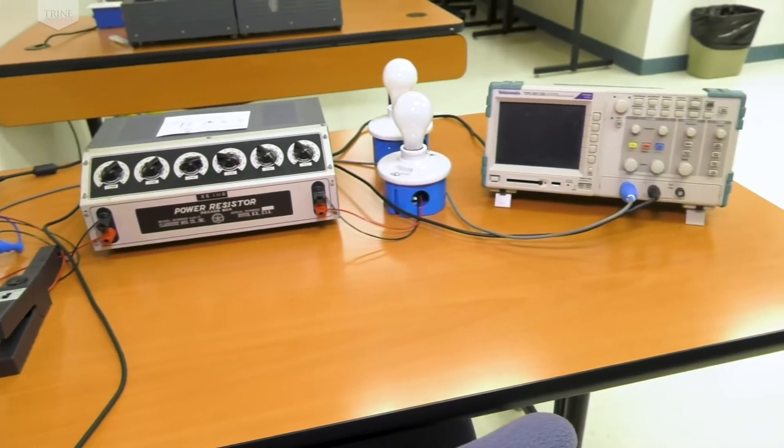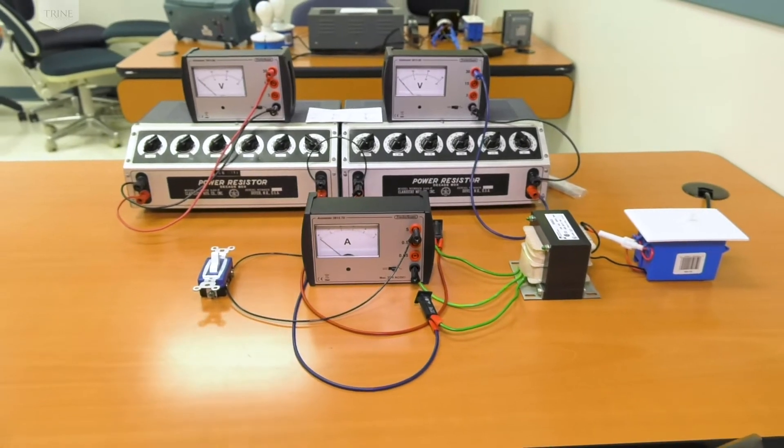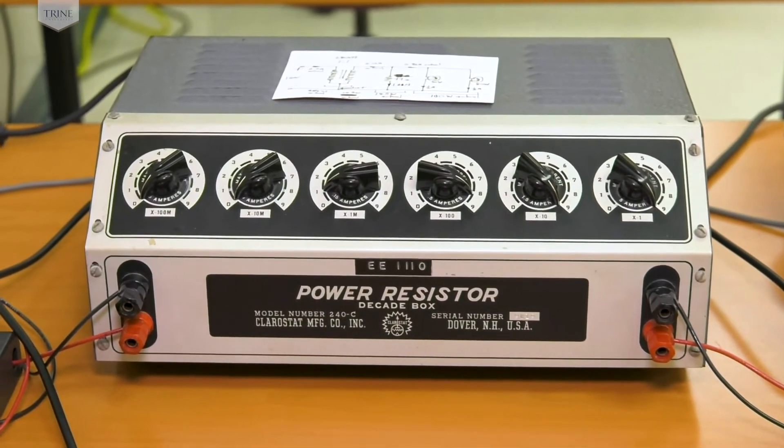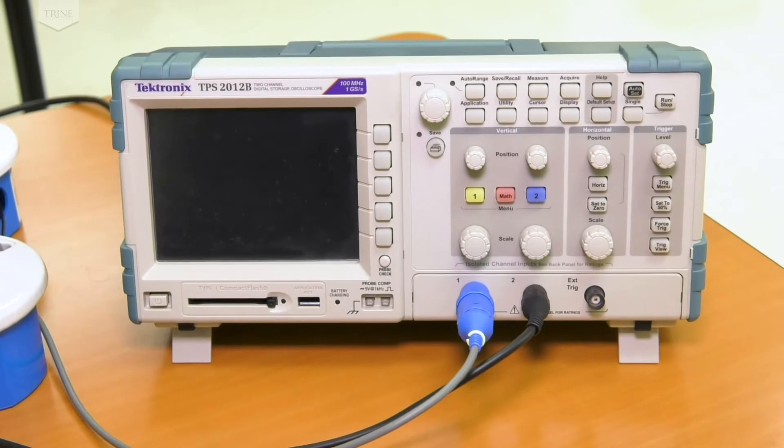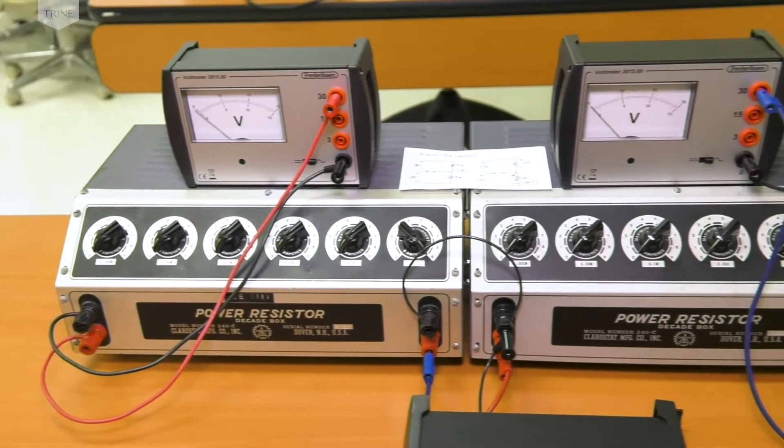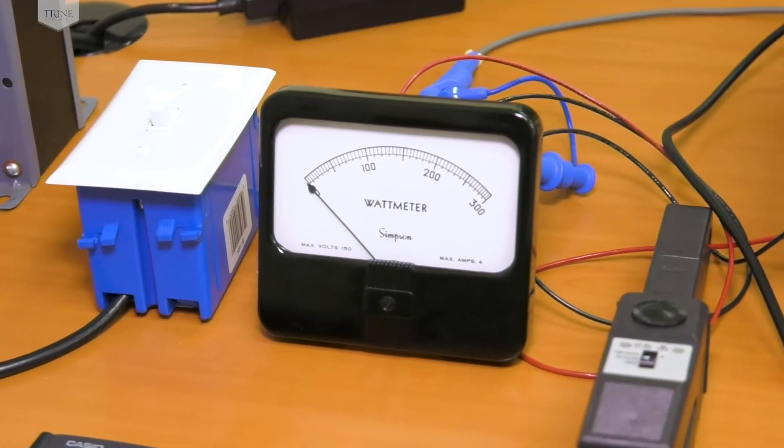An introductory experiment demonstrates what instantaneous power looks like going into a single phase bulb and includes single phase power, electrical loads, light bulbs, and a power resistor. An oscilloscope displays the 120 volt AC sine wave voltage. The experiment also has a current probe to measure the current going into the load along with other meters.